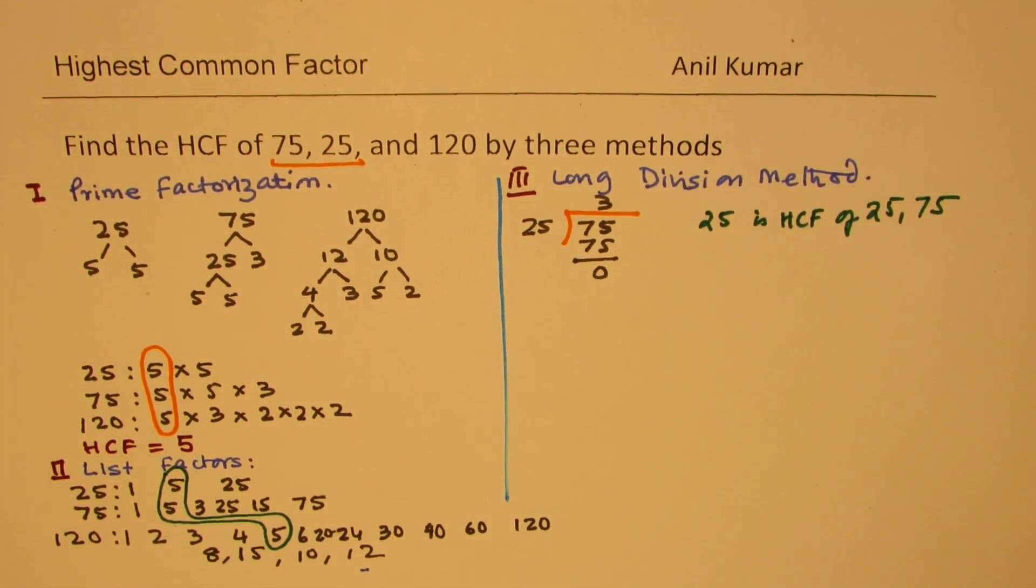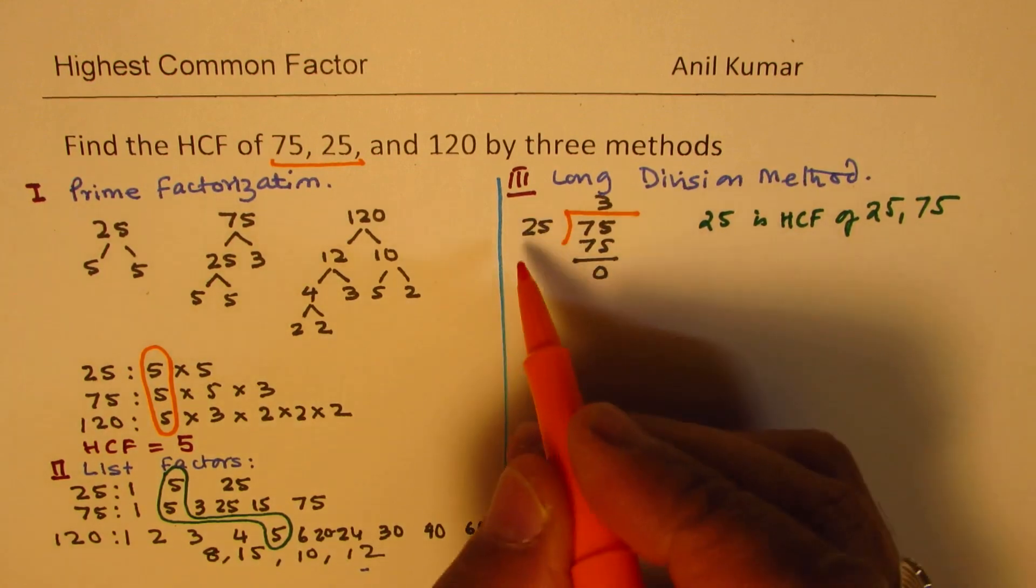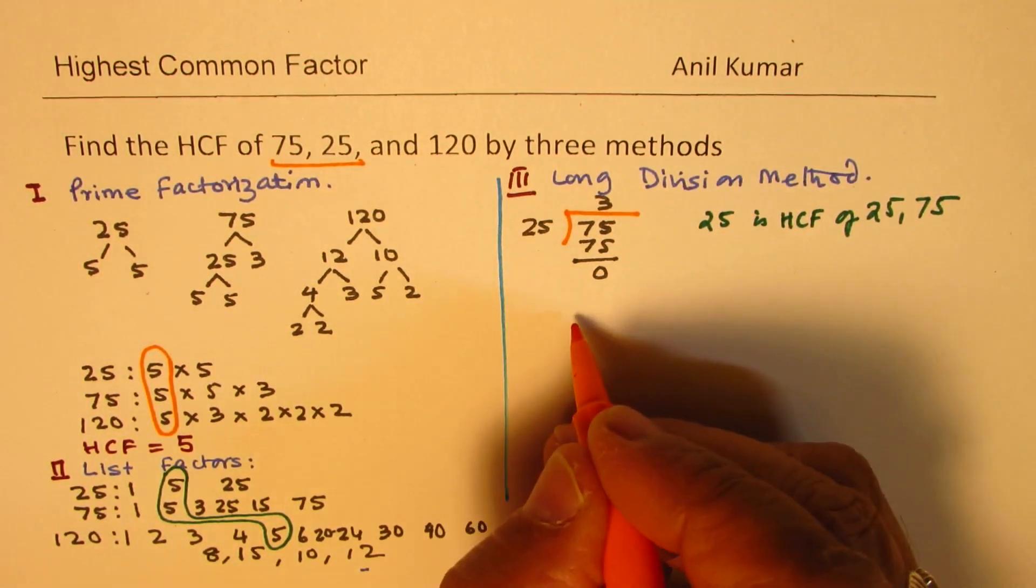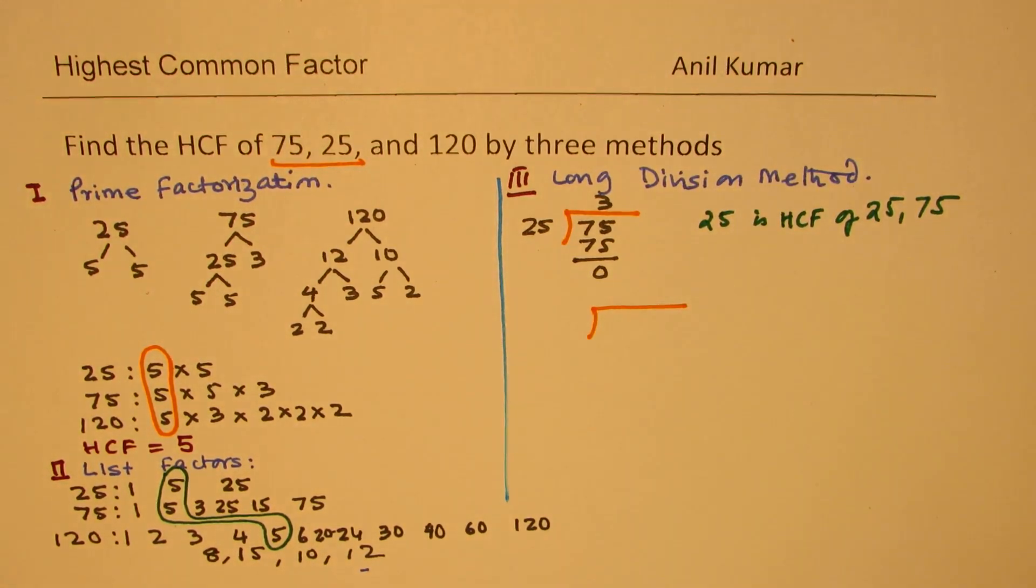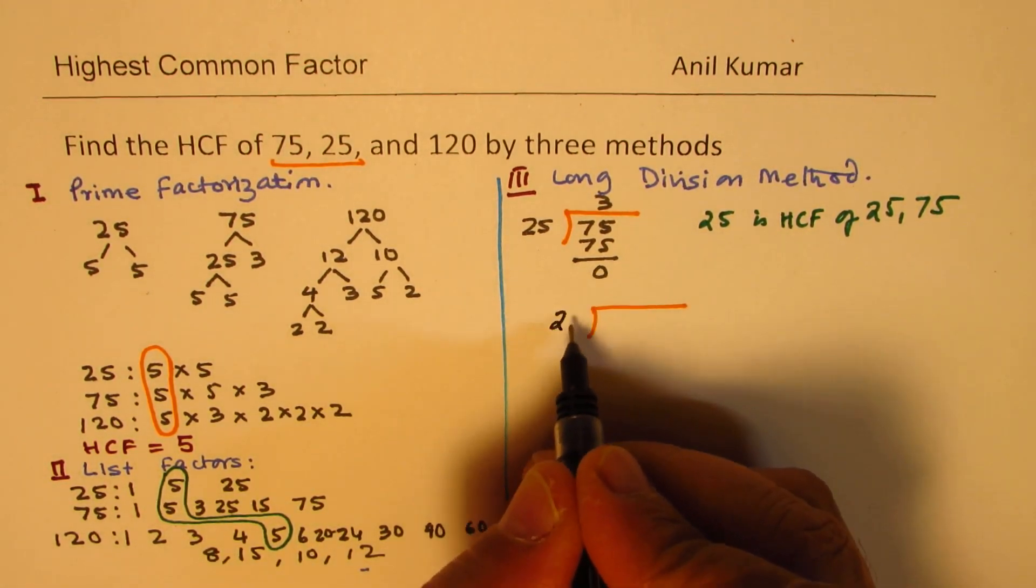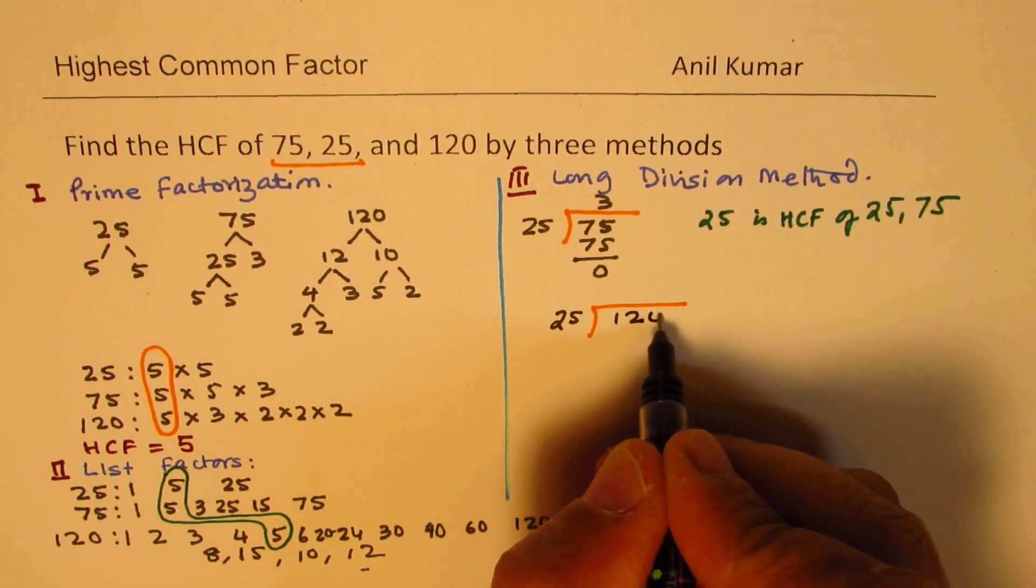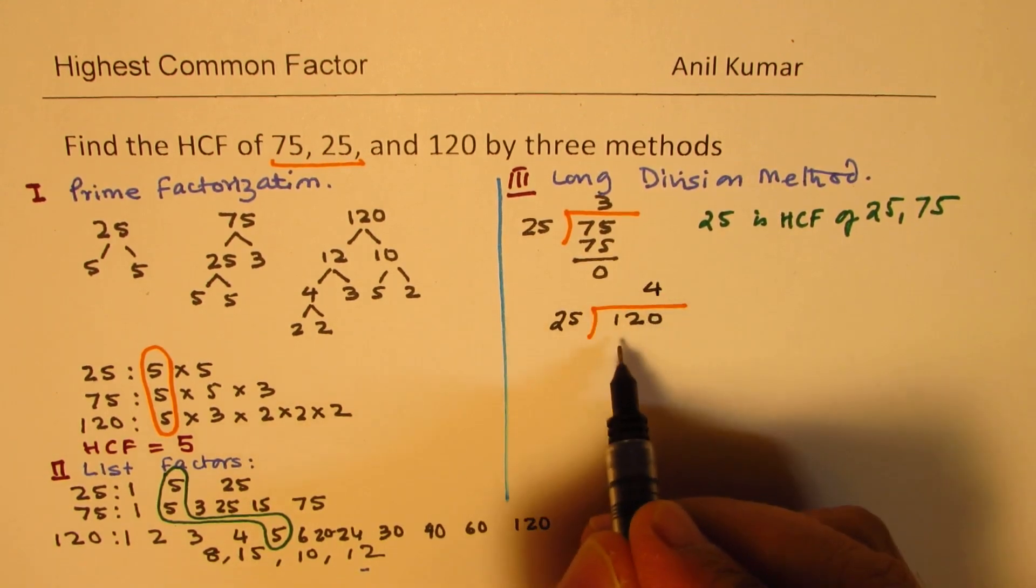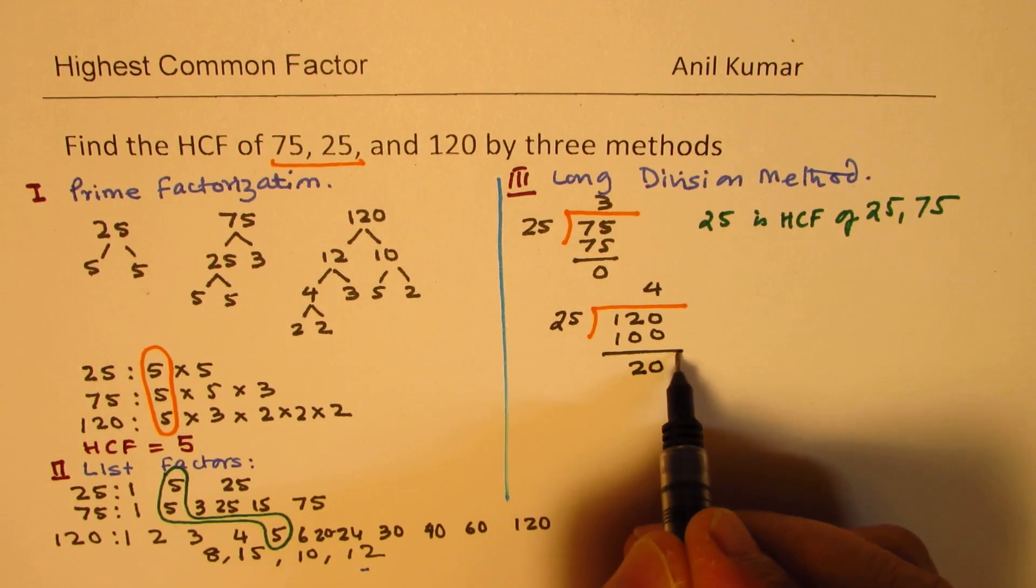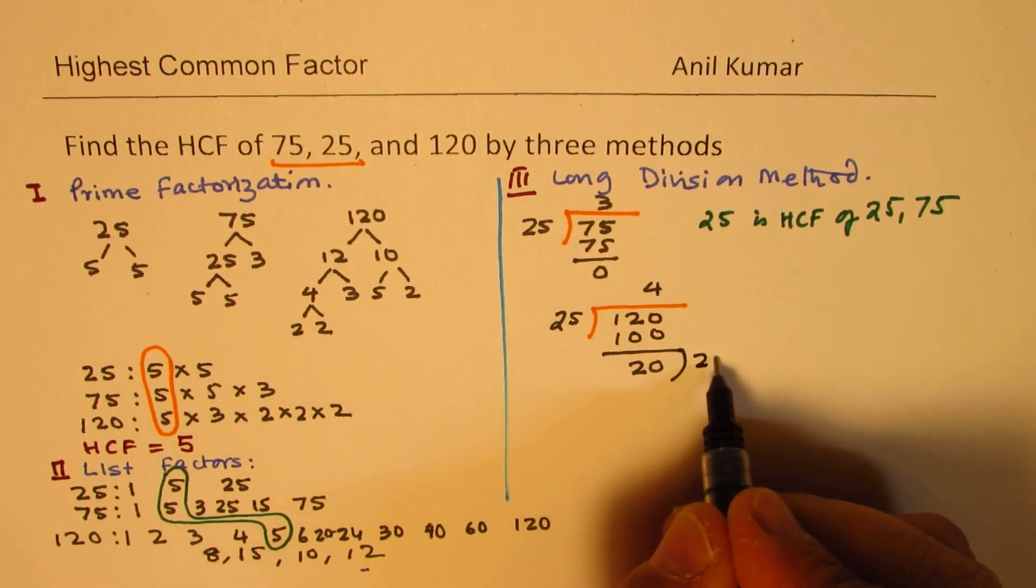Now, we will see what happens when we take 25 and 120. So, now, we will do this long division with 120 and 25. So, 4 times is 100. We are left with 20. Let's divide 20 into 25.